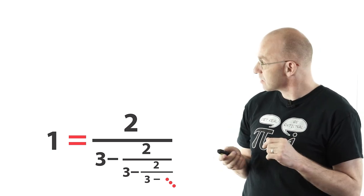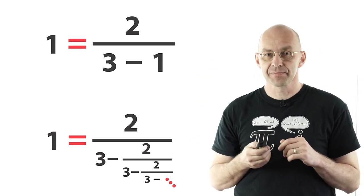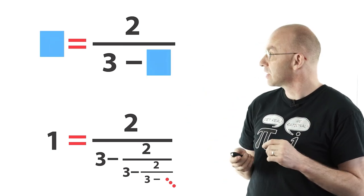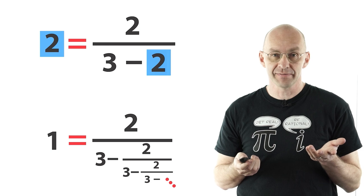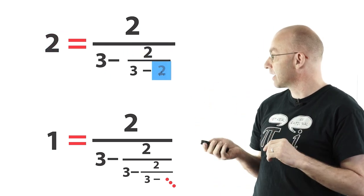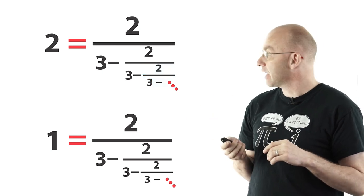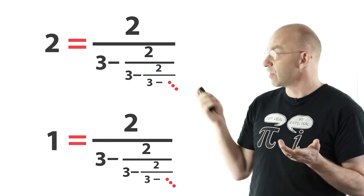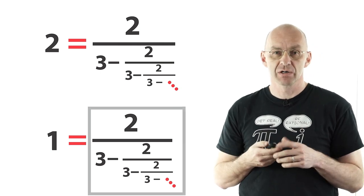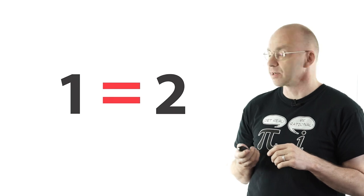Now just to remind ourselves what do we start with? This guy here. Now it turns out that if I replace all the 1's here by 2's the identity actually stays an identity. And I can repeat my game. So I replace. I replace again. I replace all the way to infinity. And let's have a look. The right sides here are actually identical. Which means of course that 1 is equal to 2.